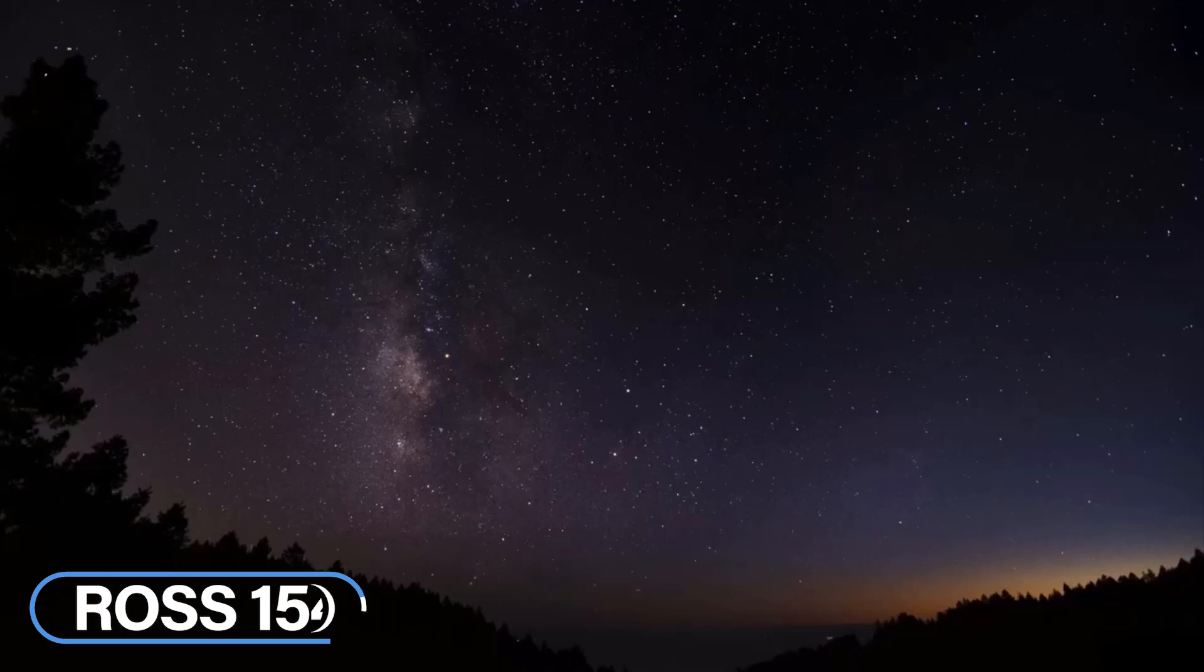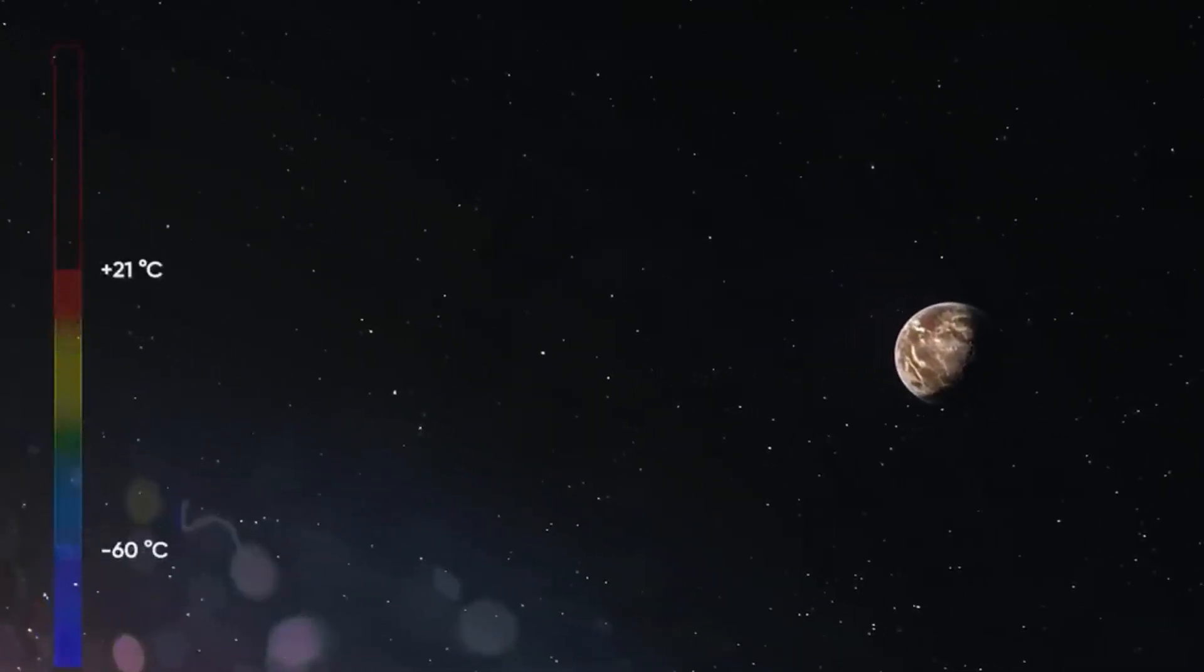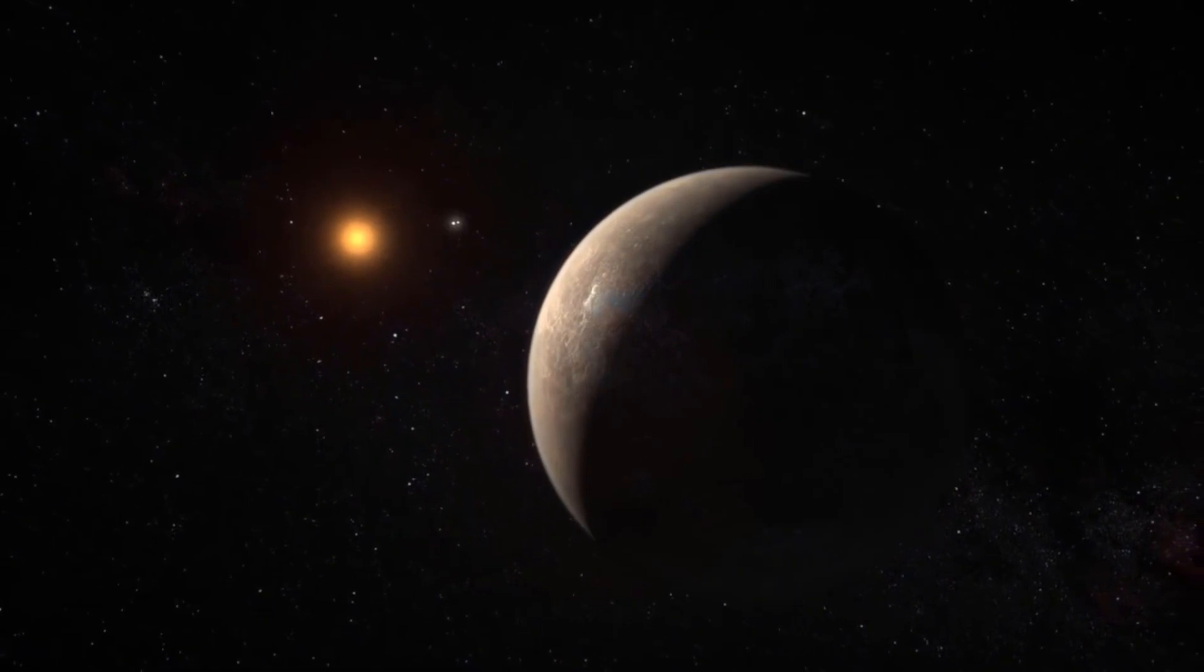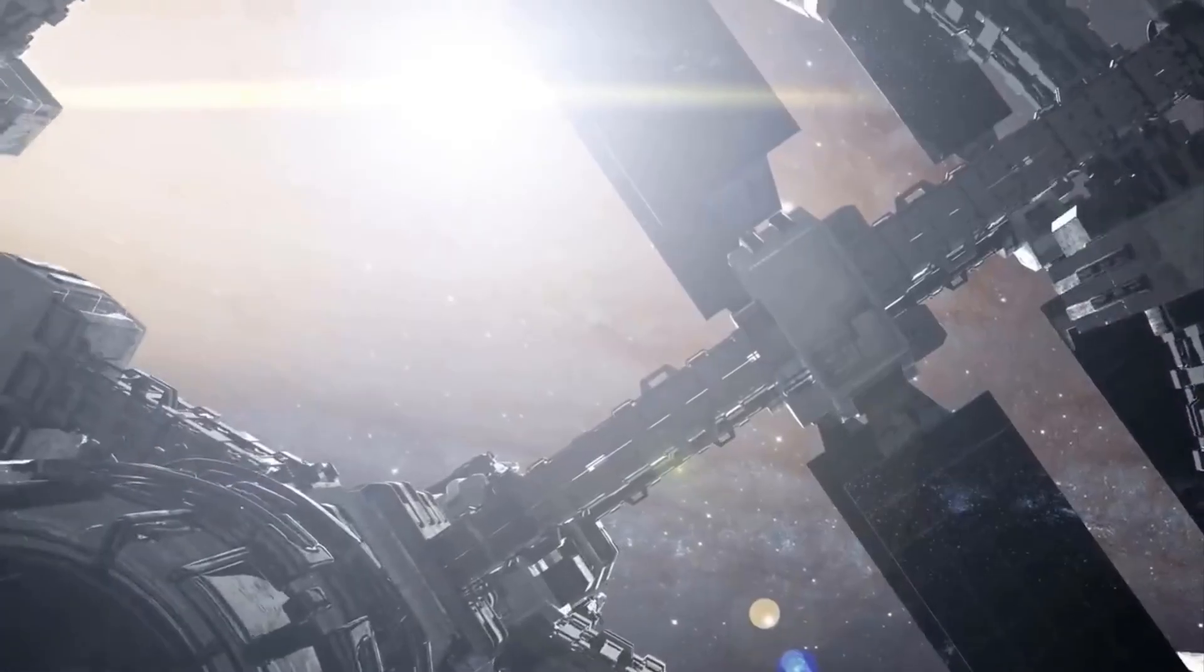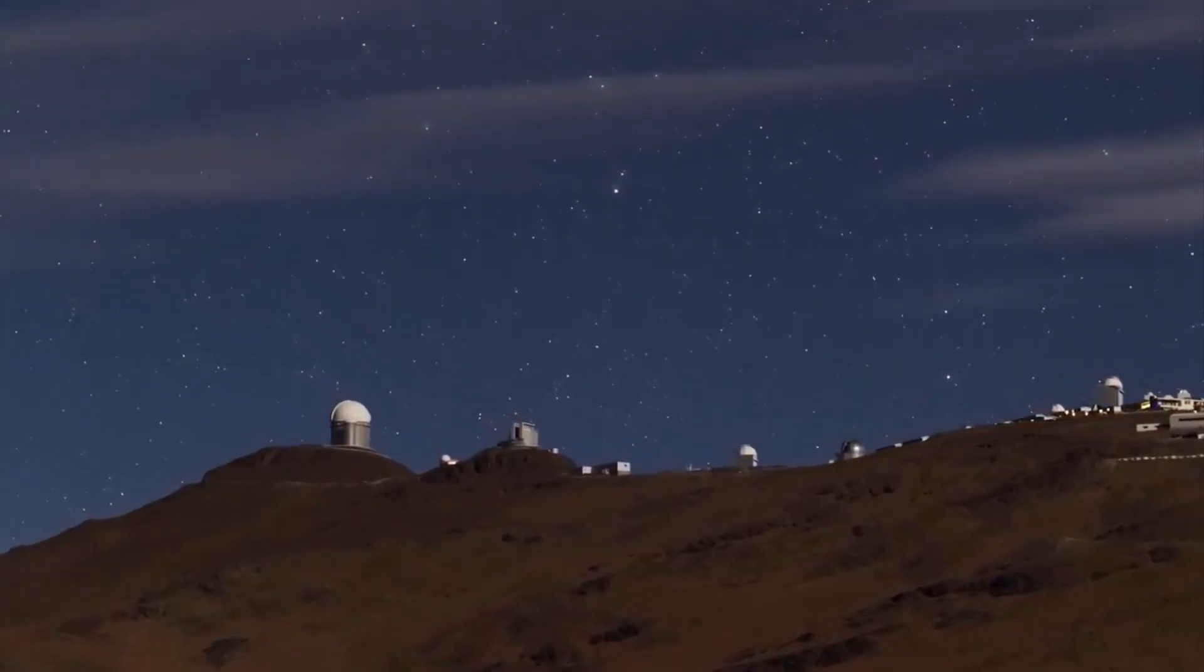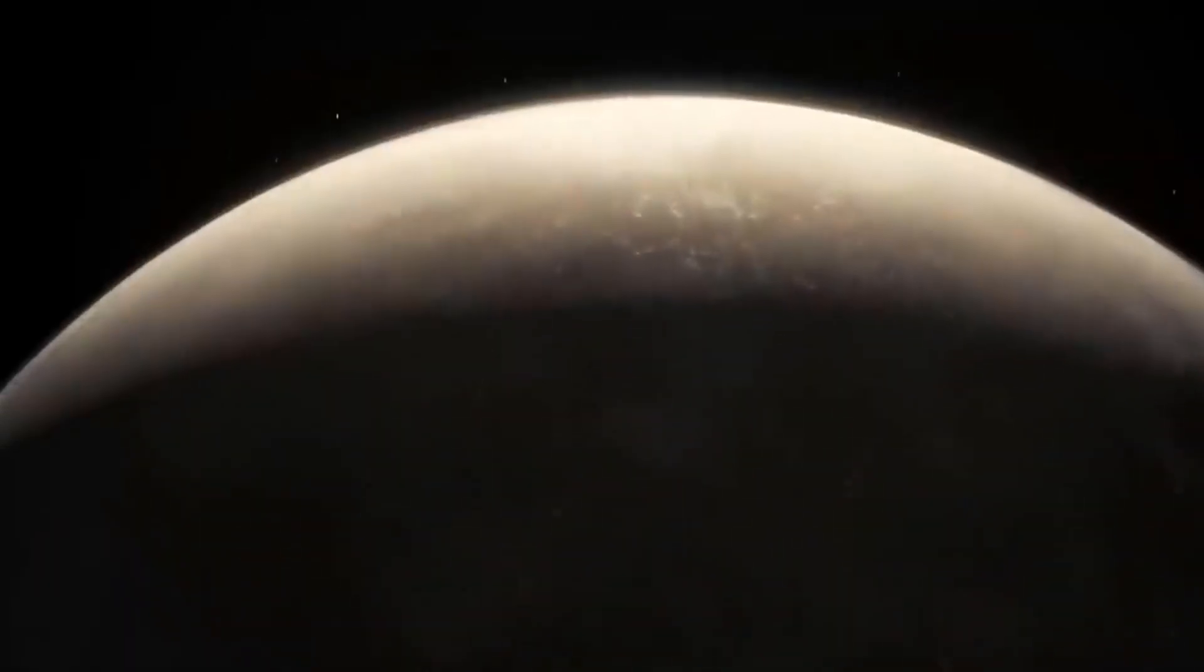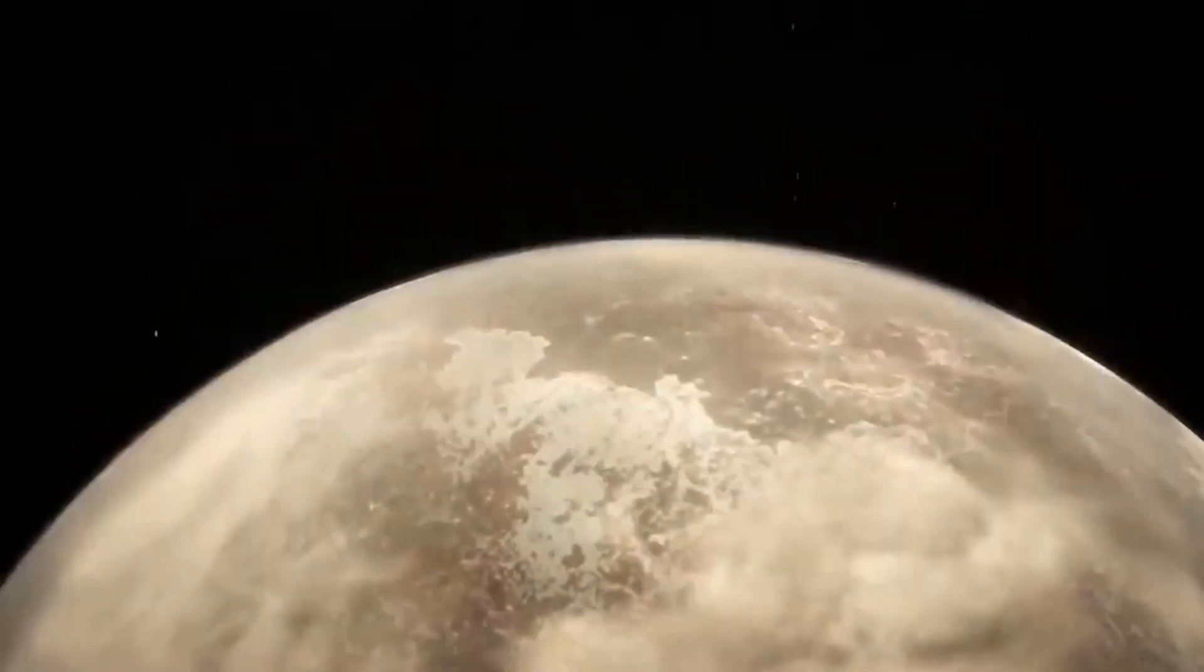Ross 154. Ross 154 sits at 9.68 light years from Earth. It is a red dwarf which is well known to astronomers thanks to it being an active flare star. This characteristic causes it to significantly increase its surface brightness in just a matter of minutes before quickly dimming back down for a short time. It is located in the constellation of Sagittarius and was also first catalogued by the American astronomer Frank Elmore Ross in 1925 as a part of his search for variable stars in the universe.